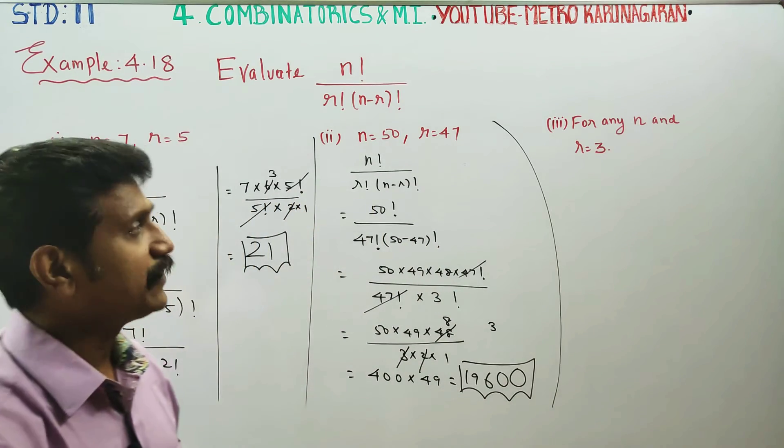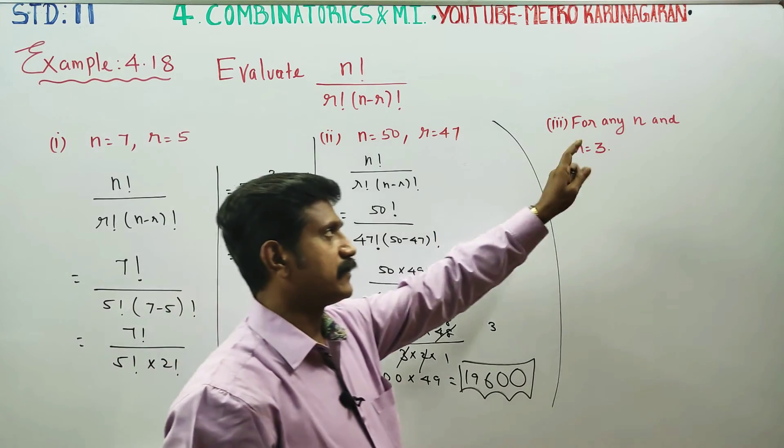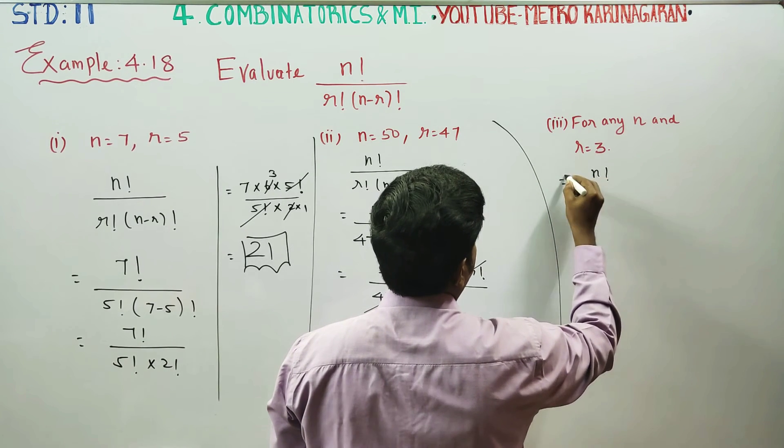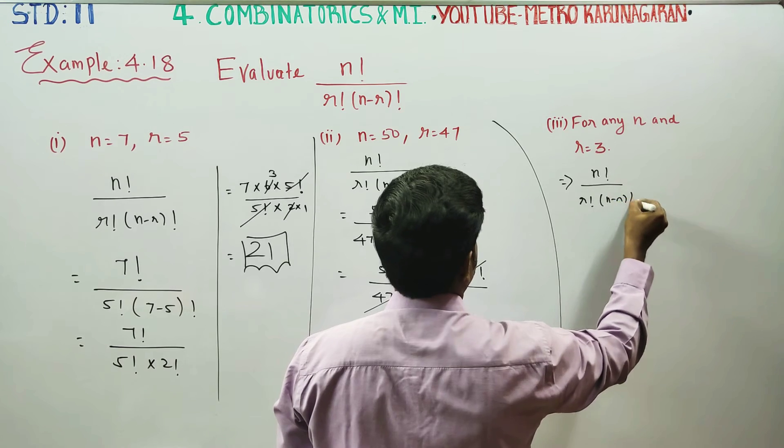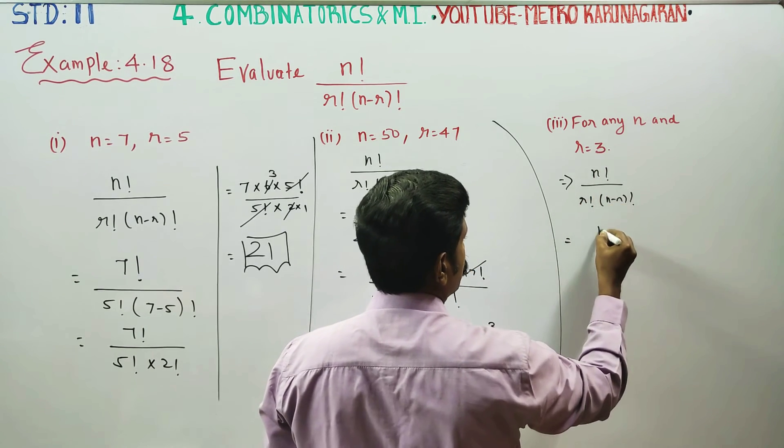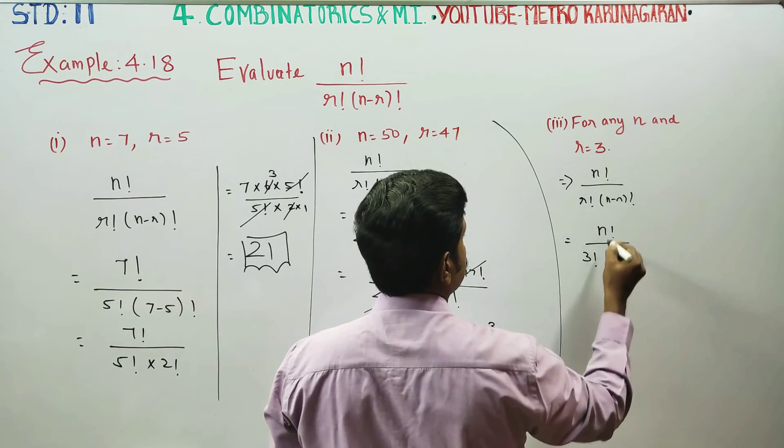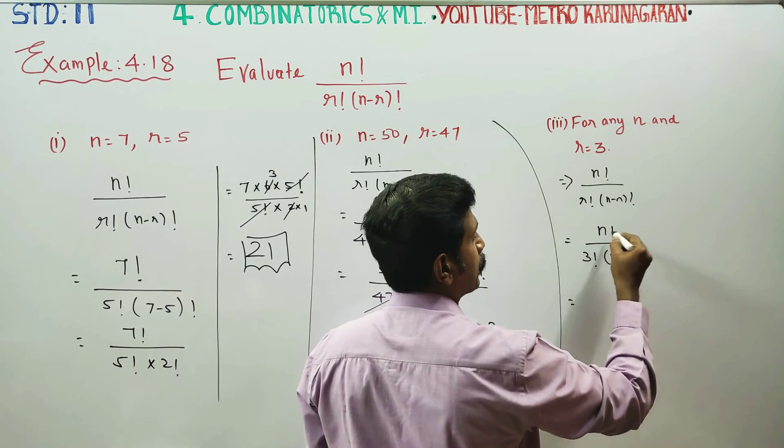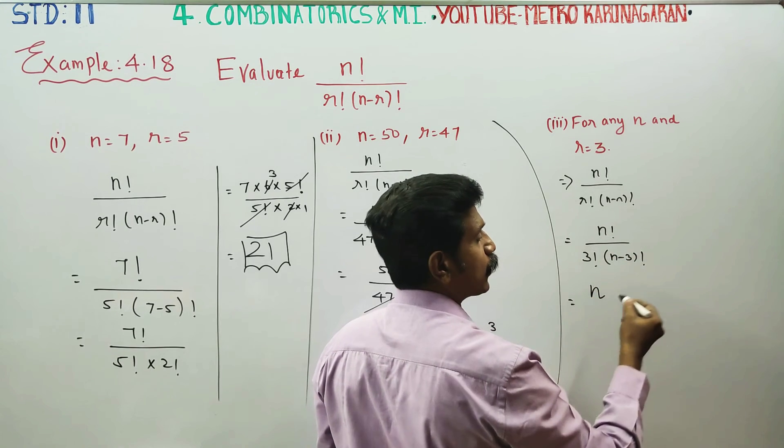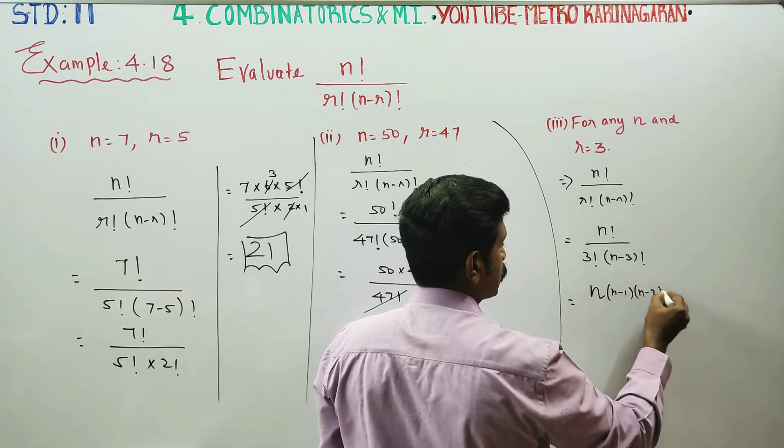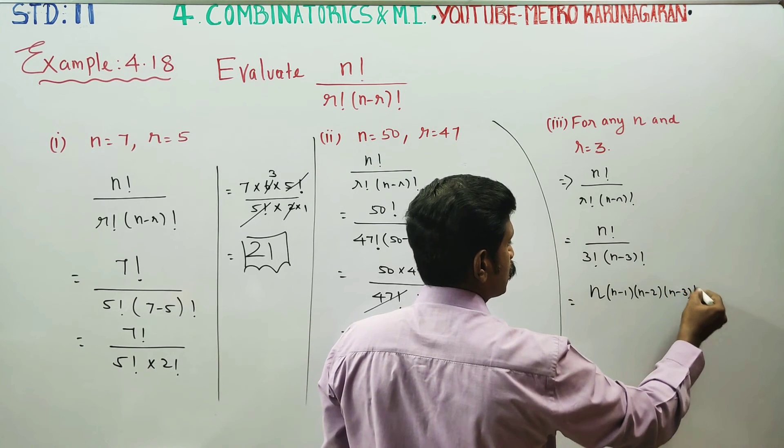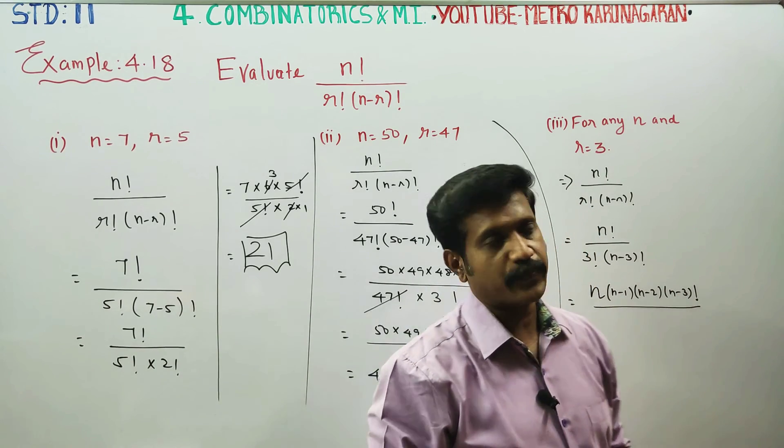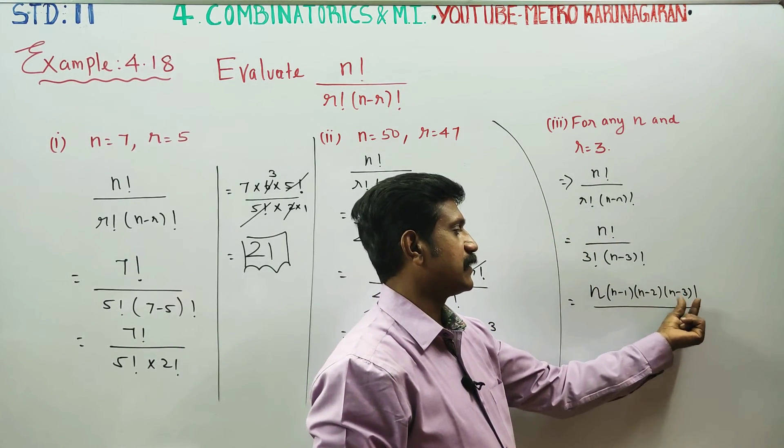Last, for any n you have to find the value of this. Your formula goes like this: n factorial by r factorial into n minus r factorial is n factorial, r is 3, n minus r factorial is n minus 3 factorial. n factorial open, stop at n minus 1, n minus 2, n minus 3.